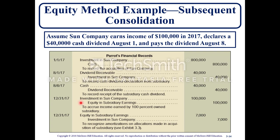The investment in Sun Company and equity in subsidiary earnings entries record the actual $100,000 in income. An adjustment is then made for amortization in equity in subsidiary earnings, and a debit to investment in Sun Company recognizes the amortization of allocations made in the acquisition of the subsidiary — the $7,000 from the excess amortization schedule.